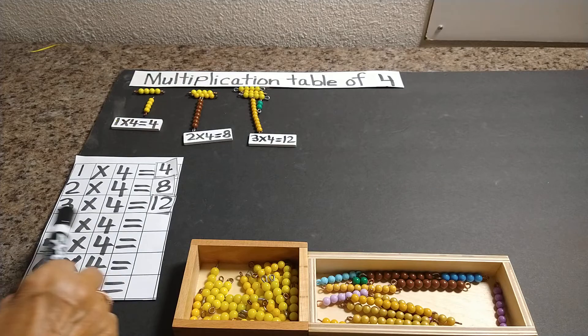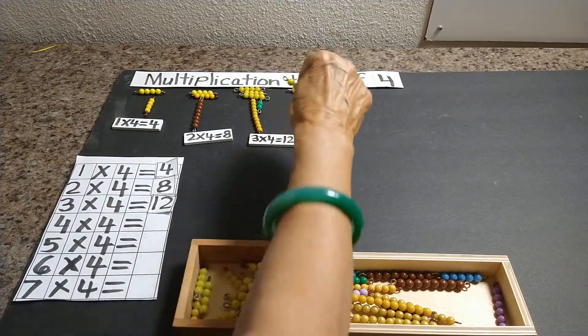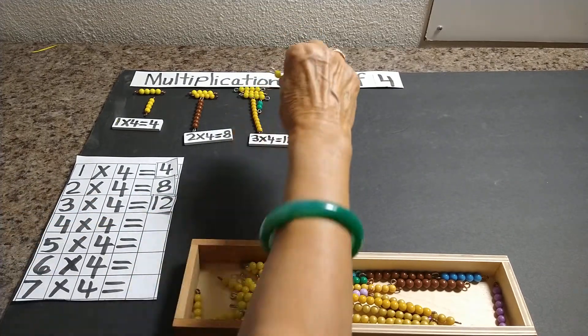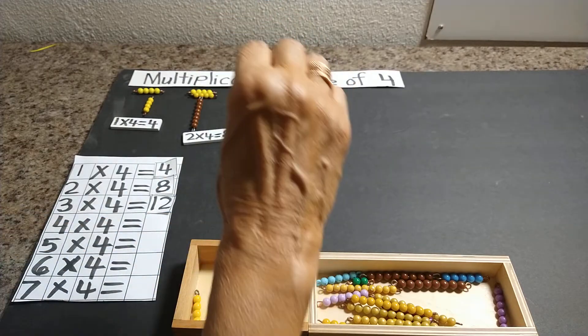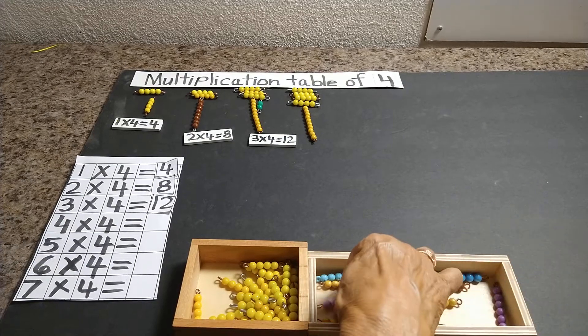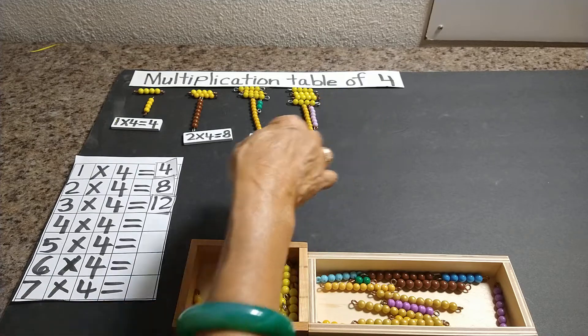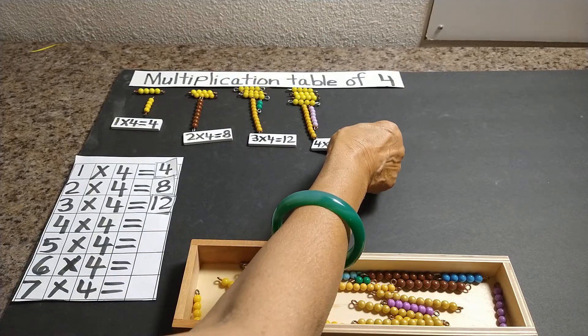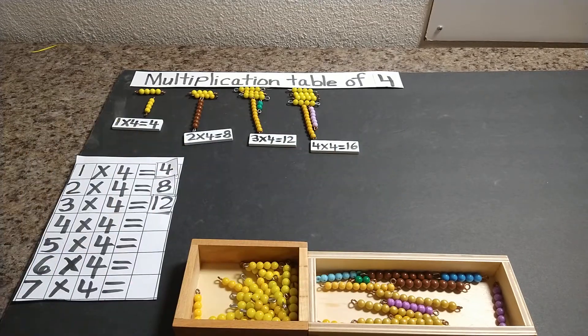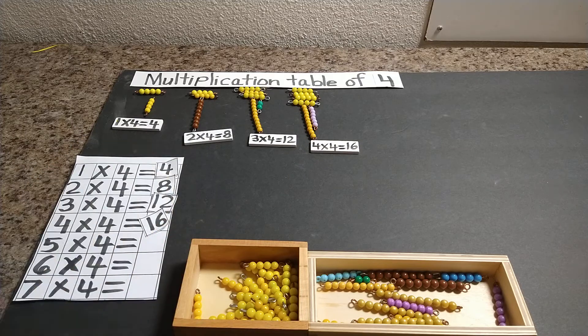4 times 4. 1 times 4, 2 times 4, 3 times 4. 4 times 4 is 16. So we need 1 ten bar and we need 6 bead bars. 10 and 6 more. So we need 1 ten bar. So we are right here.